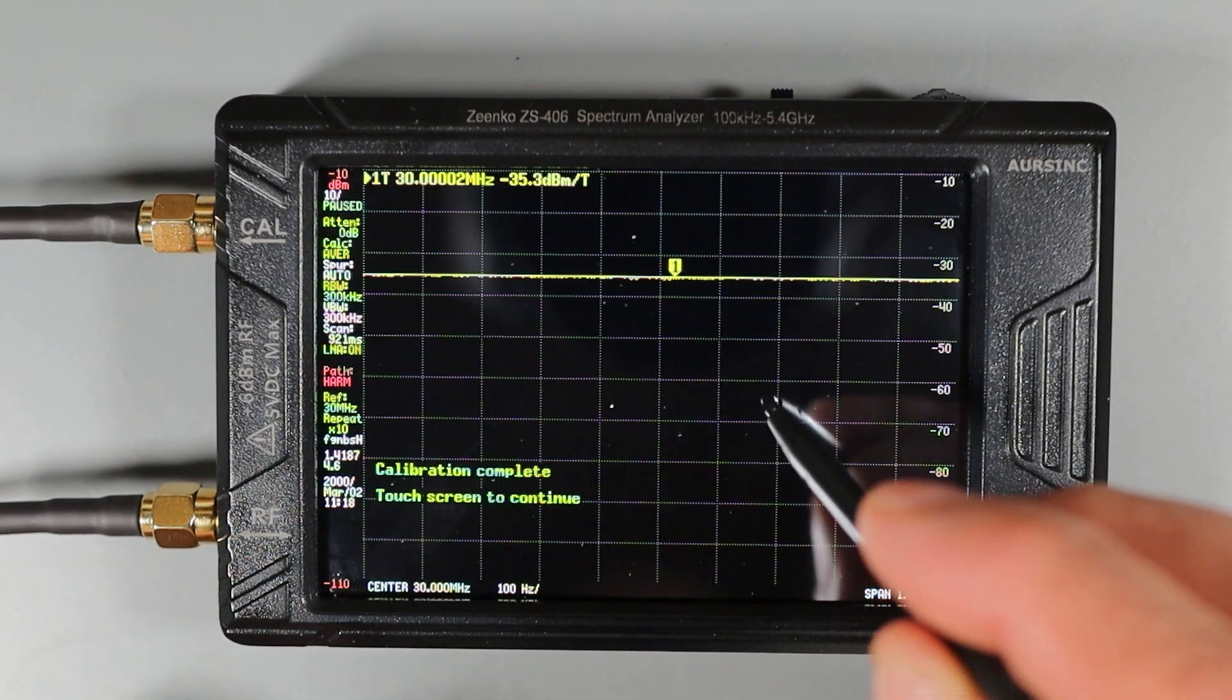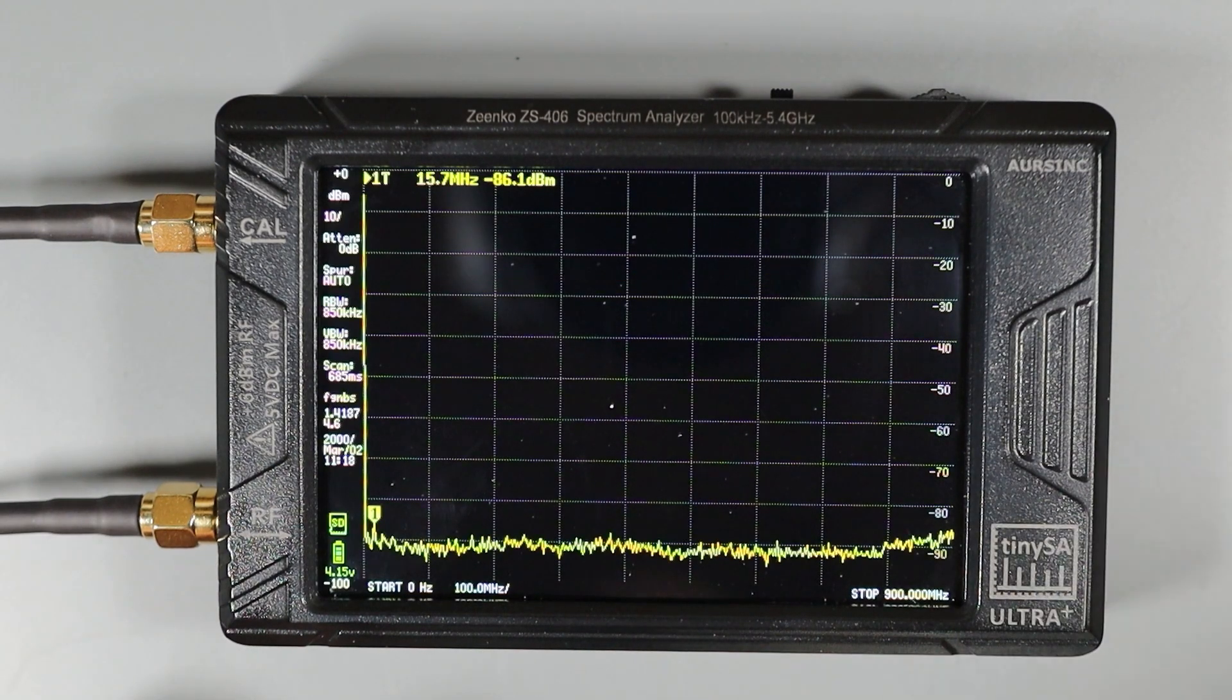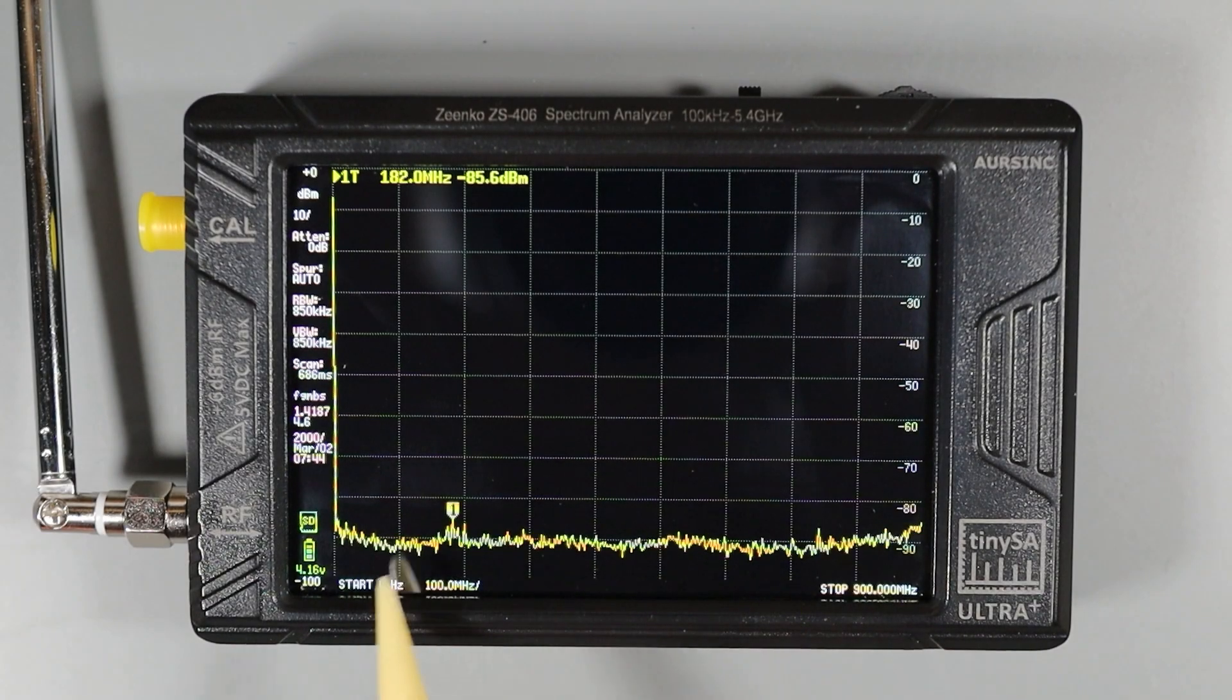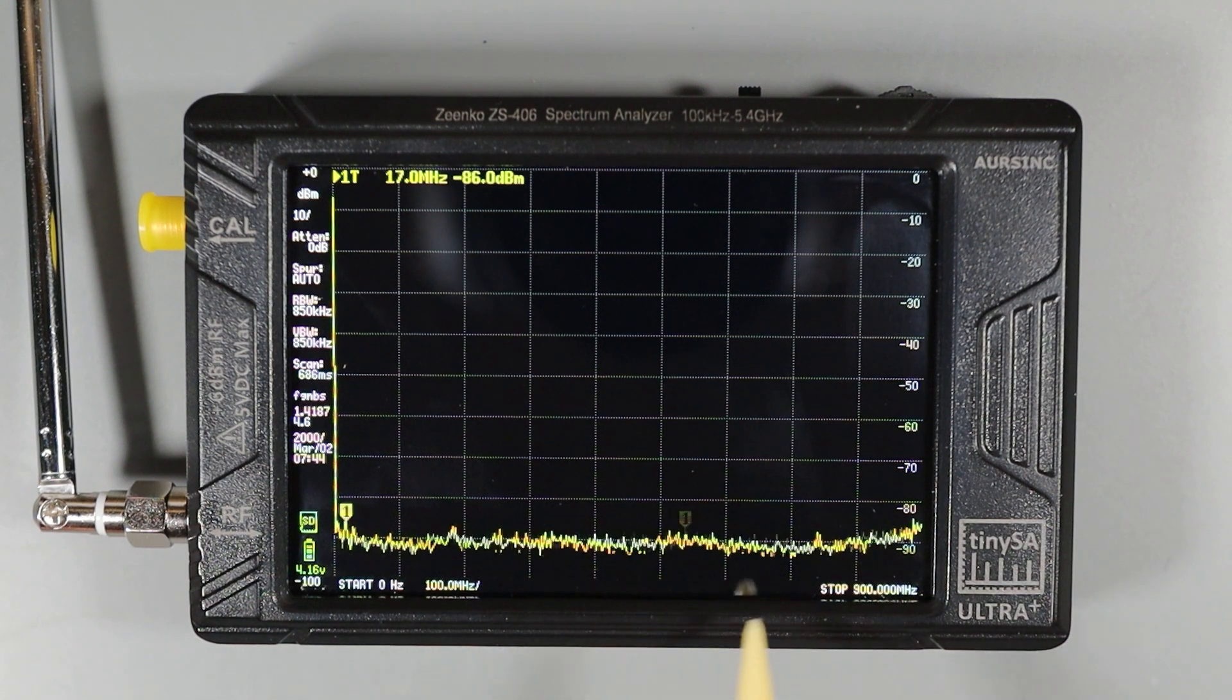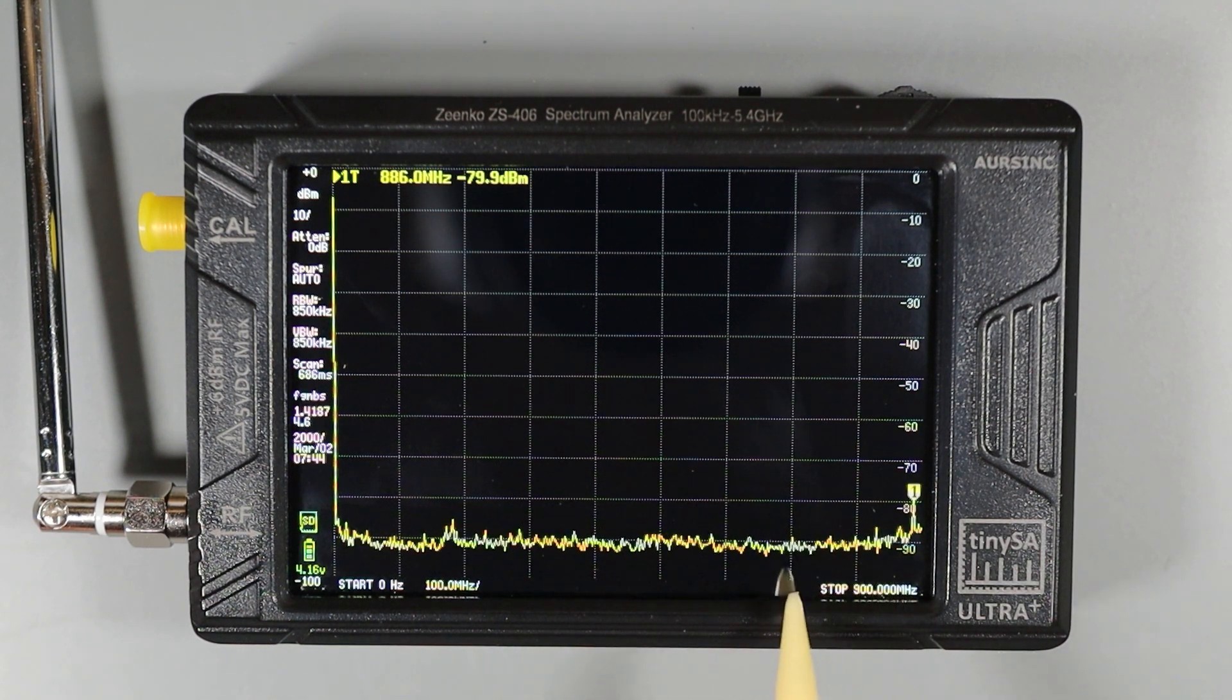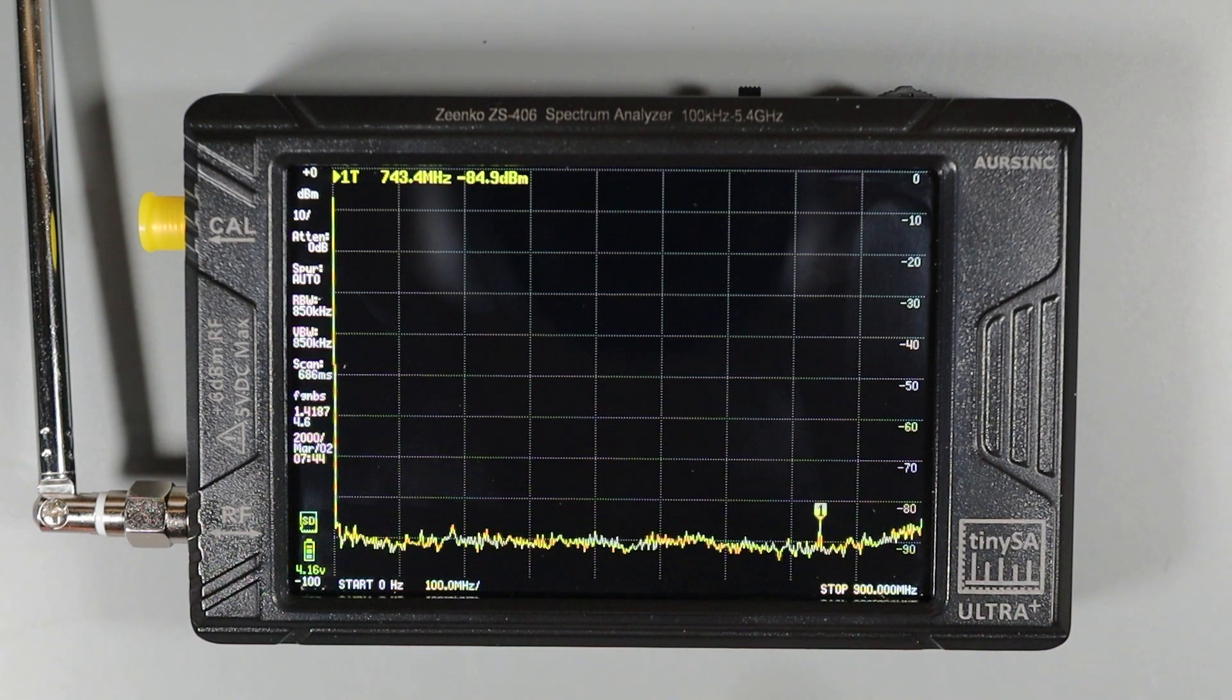Once calibration is done, we can go back into normal operation mode. Along the bottom here, you can see that we're measuring basically the noise floor of the spectrum in my workshop and that's hovering somewhere around negative 90 dB or so.